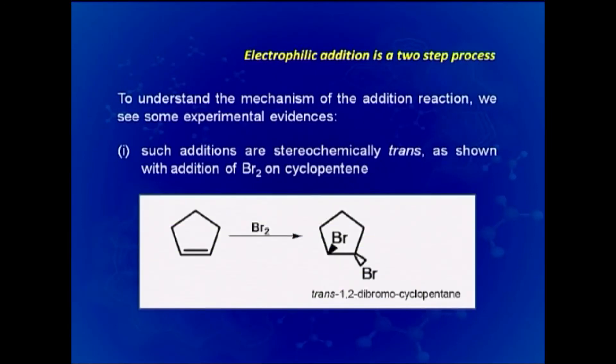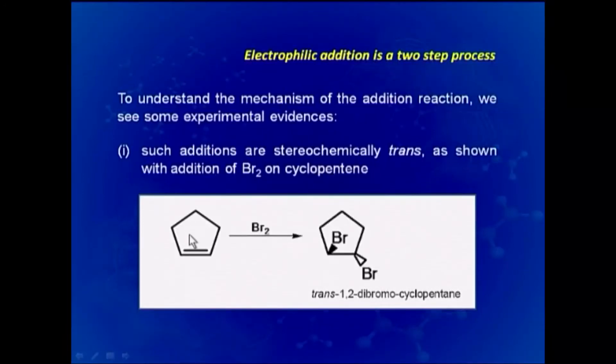Such additions are sterochemically trans, as shown with addition on cyclopentene. For simple CH2=CH2 a dibromo product forms, but since 1,2-dibromoethane has free rotation about the C–C single bond, the trans nature cannot be confirmed. However, with cyclopentene — a cyclic system with no free rotation — the product is 100% trans-1,2-dibromocyclopentane.